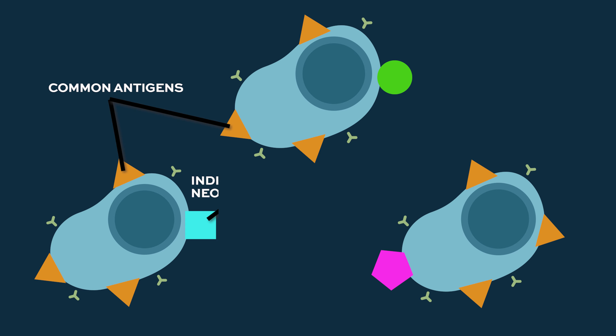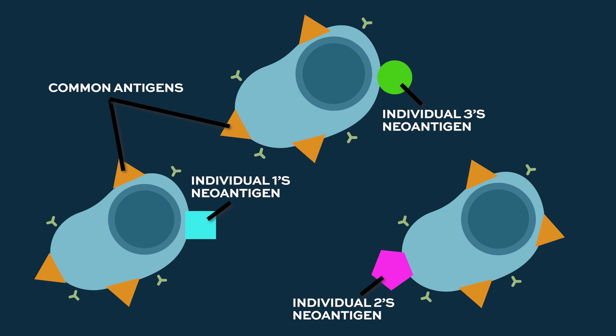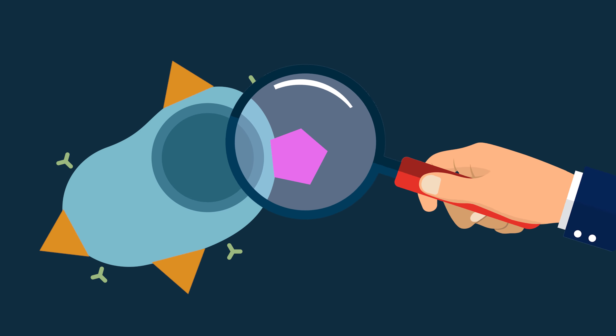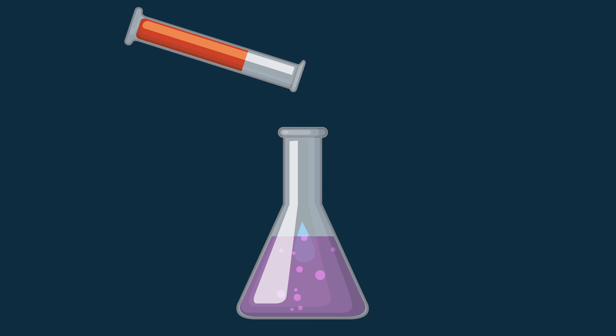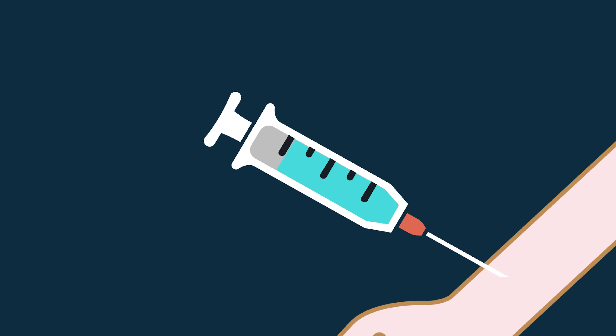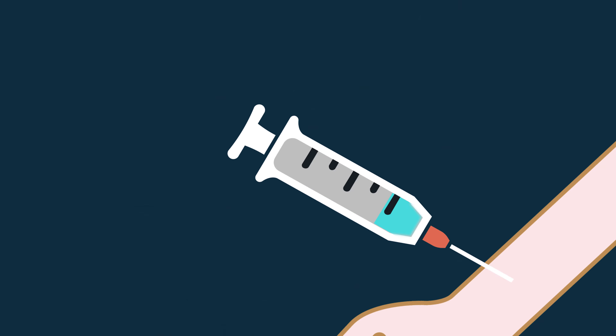Those neoantigens are antigens that are probably much more likely to generate an immune response if we can actually identify them and vaccinate for them. There have been examples in melanoma as well as glioblastoma, the brain tumors, where studies have been done identifying, synthesizing, and then vaccinating against these neoantigens. It's been shown that as we generate these responses, we can get much more potent anti-tumor immunity.